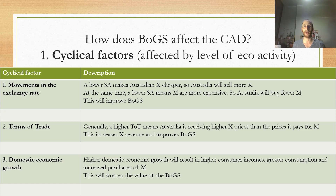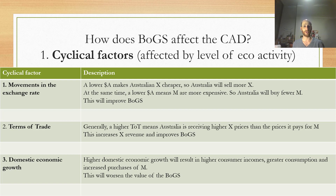Number two is the terms of trade — simply the ratio of export prices to import prices. Generally, a higher terms of trade means Australia is receiving higher export prices than the price it pays for imports. This increases export revenue relative to the cost of imports, improving BOGS and then improving the current account deficit.